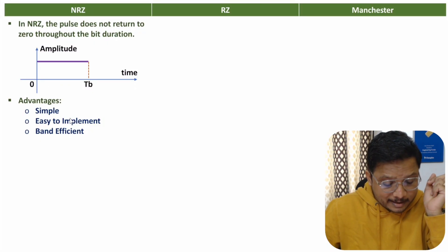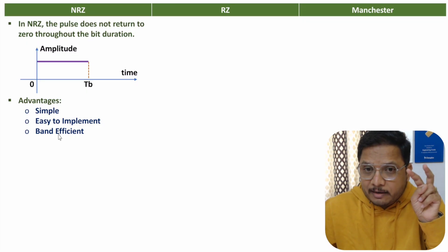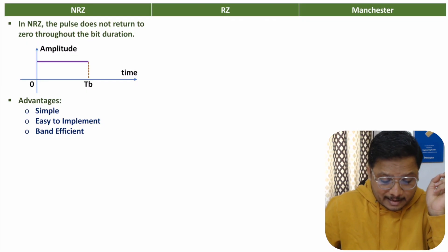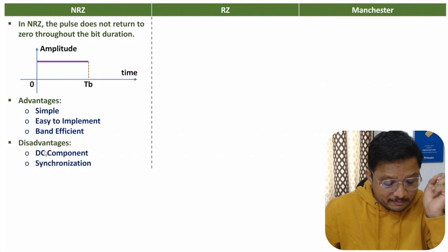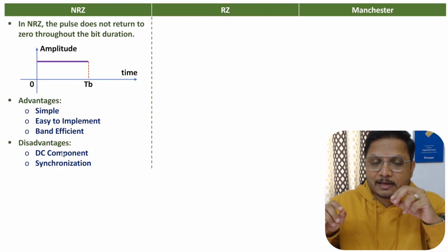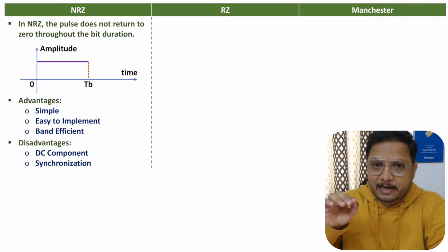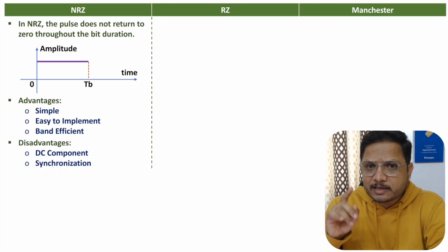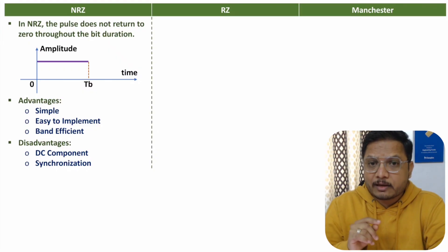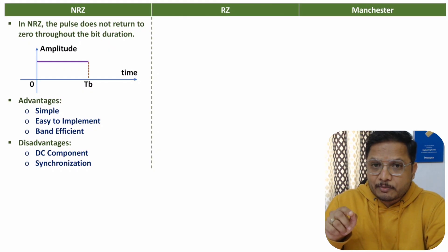The advantages of NRZ are that these pulses are simple and easy to implement, and it is bandwidth efficient — we have one pulse during bit duration Tb. For disadvantages, there will be a DC component: when you transmit a sequence of zeros and ones, with ones there will be a certain amplitude, so there will always be an average DC voltage with NRZ.